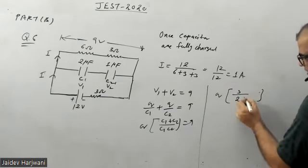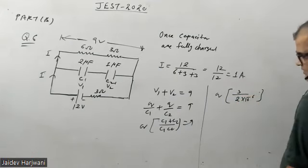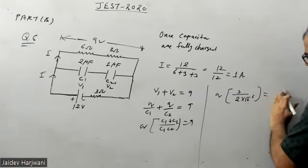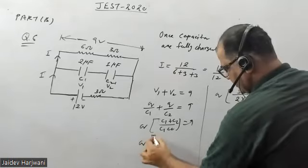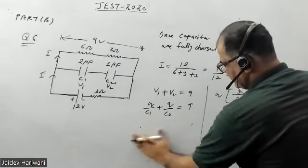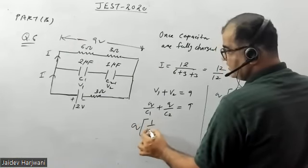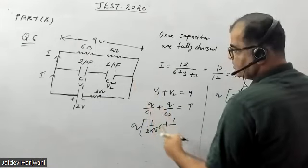This value will be in microfarad, which is 10 to the power minus 6, and that equals 9. If you put the values here and take LCM, q is common. 1 by c1 is 1/2 microfarad and 1 by c2 is 1/1 microfarad.